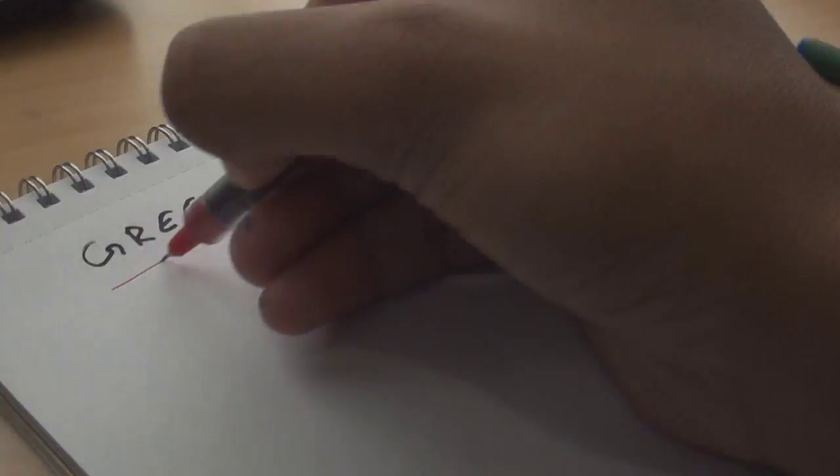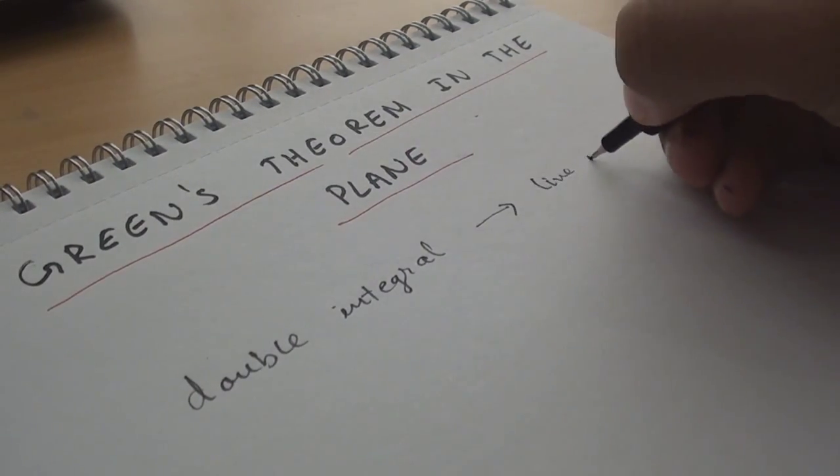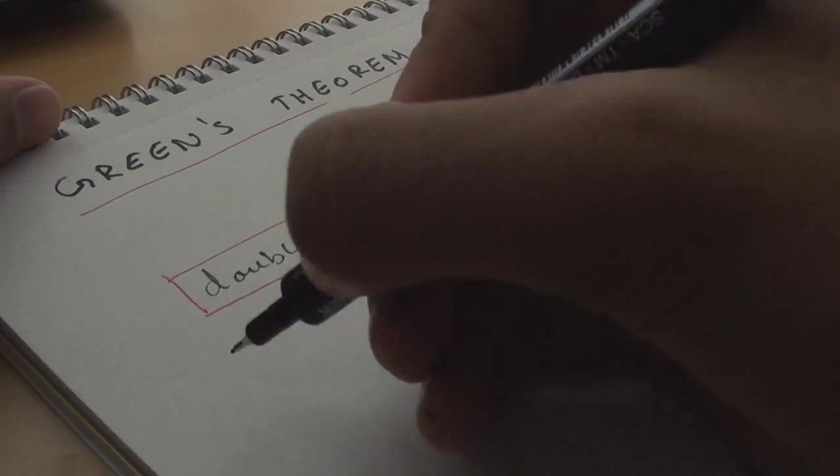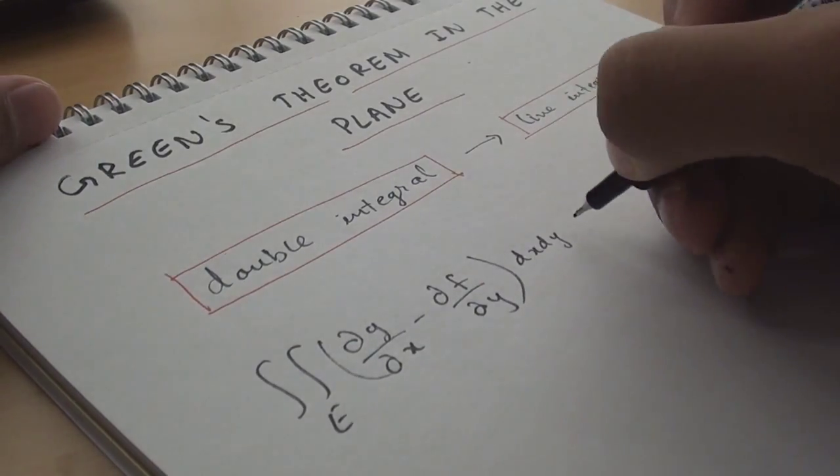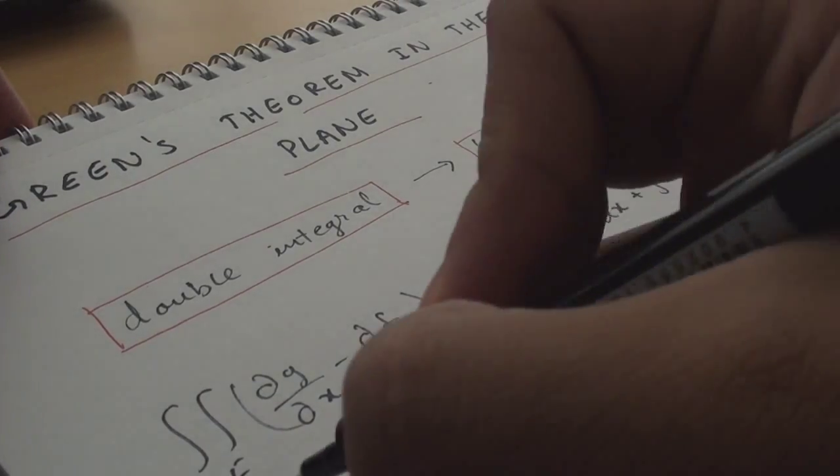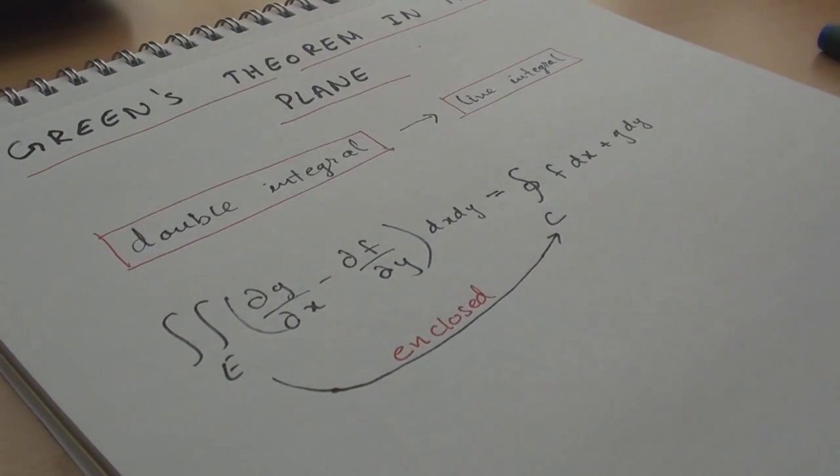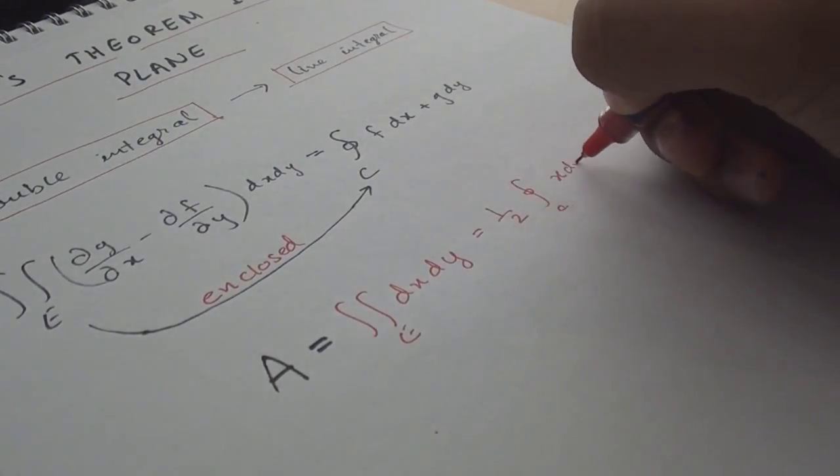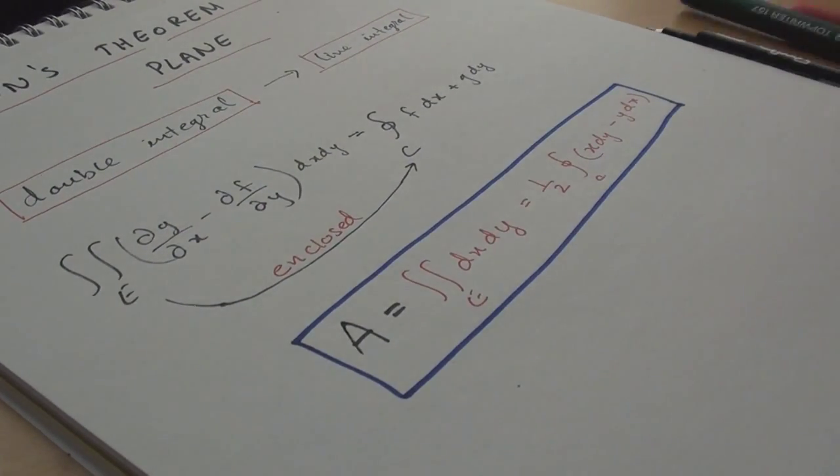Green's theorem in a plane. It's a way of saying that the double integral over region is equal to the line integral around the region counterclockwise. It's of practical interest because sometimes it helps to make the evaluation of an integral easier. So as per this theorem, double integration of partial derivative of g with respect to x minus the partial derivative of f with respect to y dx dy equals to the closed line integration of f dx plus g dy where E is the plane enclosed by c. The area of region E is defined as 1/2 times the closed integral of x dy minus y dx.